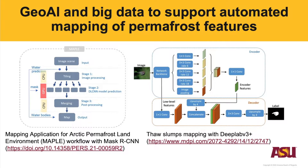Previous research has already leveraged Geo AI and big data to support automated mapping of permafrost features. For example, on the left-hand side, this is a workflow called MAPL, which adopts a Mask RCNN to segment ice wedge polygons. And on the right-hand side, this is another work using a semantic segmentation model to segment source lumps.